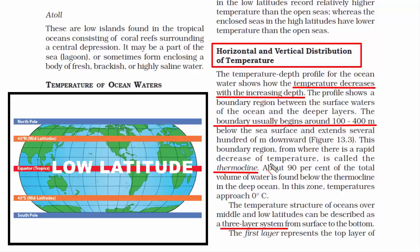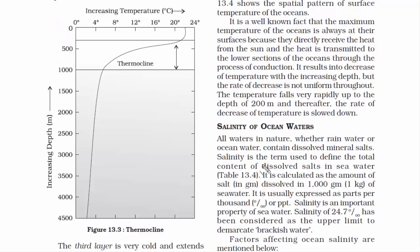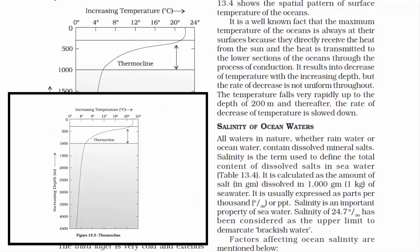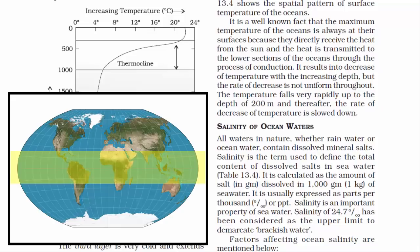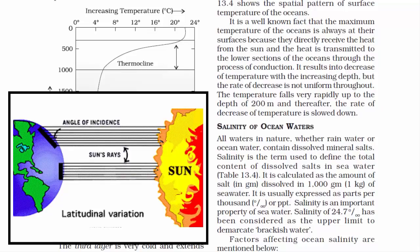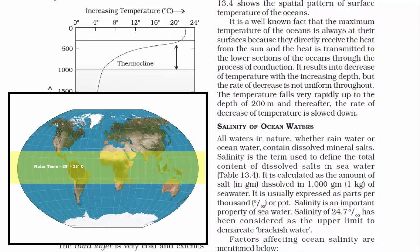The temperature structure of oceans over middle and low latitudes can be described as a three-layer system from surface to bottom, as shown in figure 13.3. The first layer — the top layer — is about 500 meters thick, with a temperature between 20 and 25 degrees Celsius. At the equatorial region, this temperature range exists throughout the year because the equator receives direct sun rays all year. In the middle latitude region, this same temperature develops only during summer.